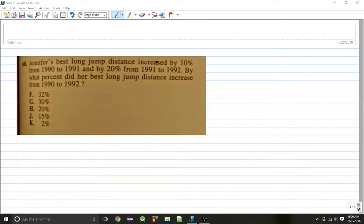Jennifer's best long jump distance increased by 10% from 1990 to 1991 and 20% from 1991 to 1992. By what percent did her best long jump distance increase from 1990 to 1992?